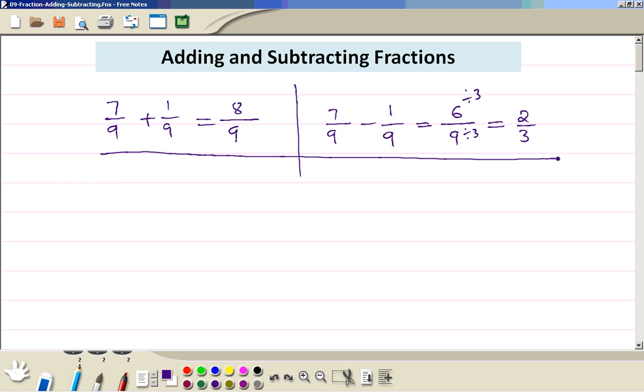Then the next level, we have 2 out of 5 plus 1 quarter. Because the bottom numbers are different, we have to make them the same. So 20, 20 here, because the least common multiple of 4 and 5 is 20.